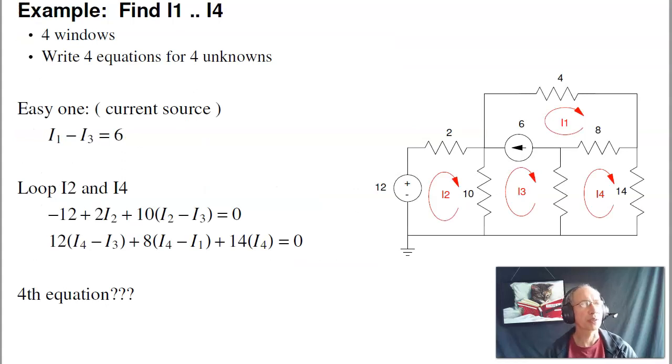For example, suppose I had this circuit. I've got four loops. I want to write four equations for unknowns. Three of the equations are pretty easy. Start with the current source. This just says that I1 minus I3 equals 6. Now go around loop I2. Minus 12 plus 2I2 plus 10(I2 - I3) equals 0.